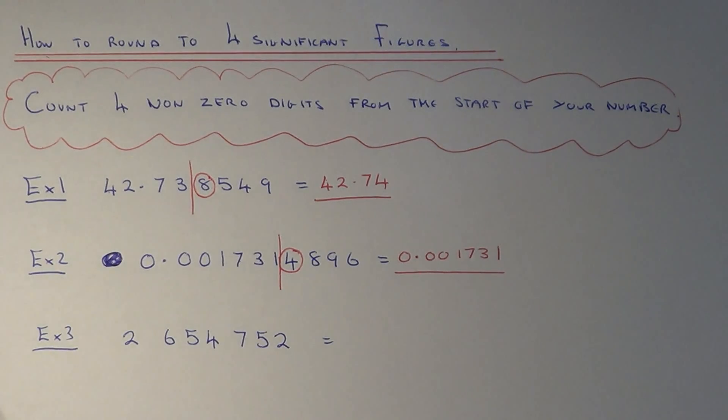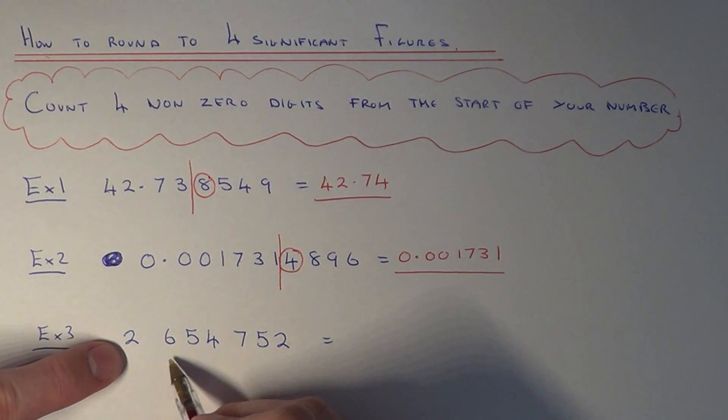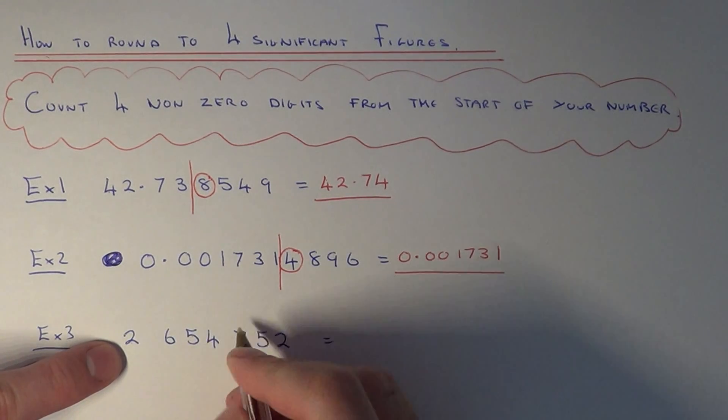Let's do one final example. This time we have a large number, 2,654,752. If we round this one off to four significant figures, that's four non-zero digits from the start: one, two, three, four.